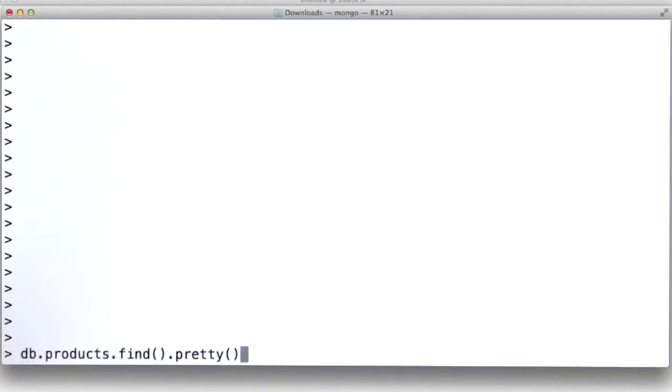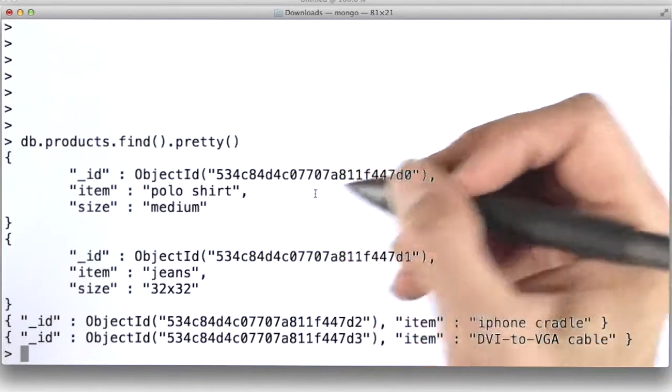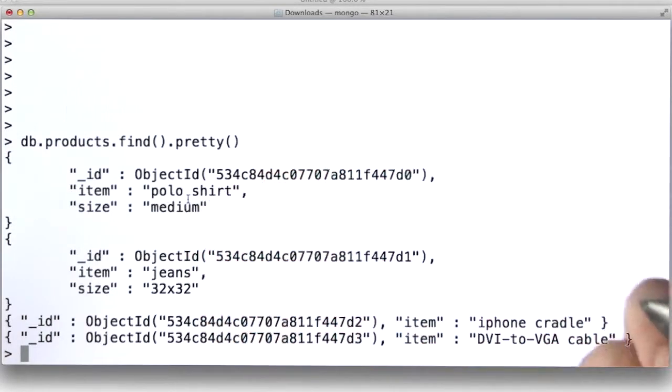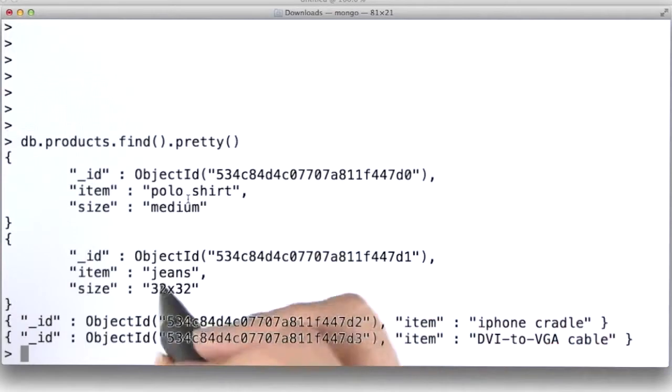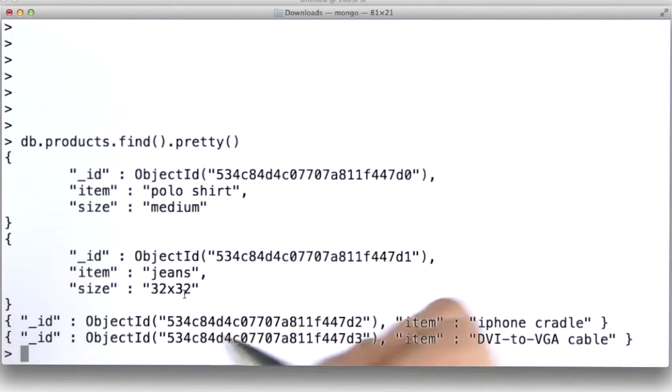We have a small collection of products. We can see that the first document is a polo shirt with a size of medium. The second document is a pair of jeans with a size of 32 by 32. The third document is an iPhone cradle with no size. And the fourth document is a deviated VGA cable with no size.